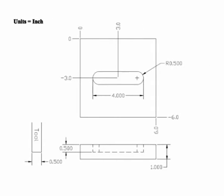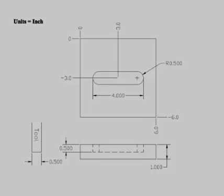In this programming example, we will make a slot milling inside of our workpiece. From our example part print, you will see that we have a 4-inch long slot that is centered on our workpiece. Our selected tool for this operation is a 1½ inch diameter end mill.